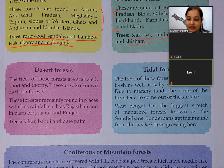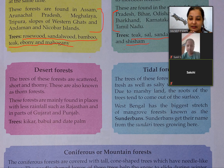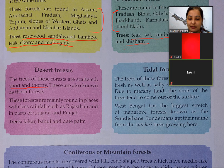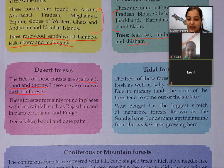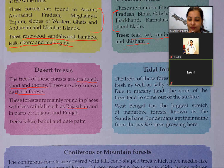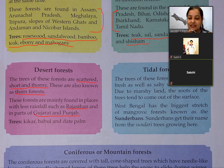Desert forest: the trees of these forests are scattered, short and thorny. These are also known as thorn forests. They are mainly found in places with less rainfall, such as Rajasthan and parts of Gujarat and Punjab. Trees found here include kikar, babool and date palm.